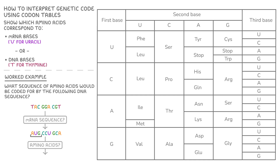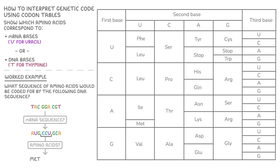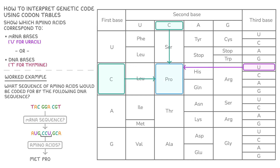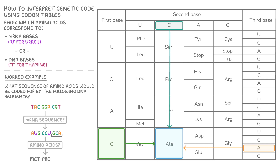Then we need to read the codon table to see what amino acids this would produce. For the first codon AUG, we look in the first base column for A, then narrow down our options with the second base U, and then read off our final base G, to see that this codon codes for the amino acid methionine, or MET for short. Then doing the same thing for our next mRNA codon, we can see that CCU codes for proline, or PRO. And the last codon GCA codes for alanine, or ALA. So overall, this DNA sequence codes for methionine, proline, and alanine.